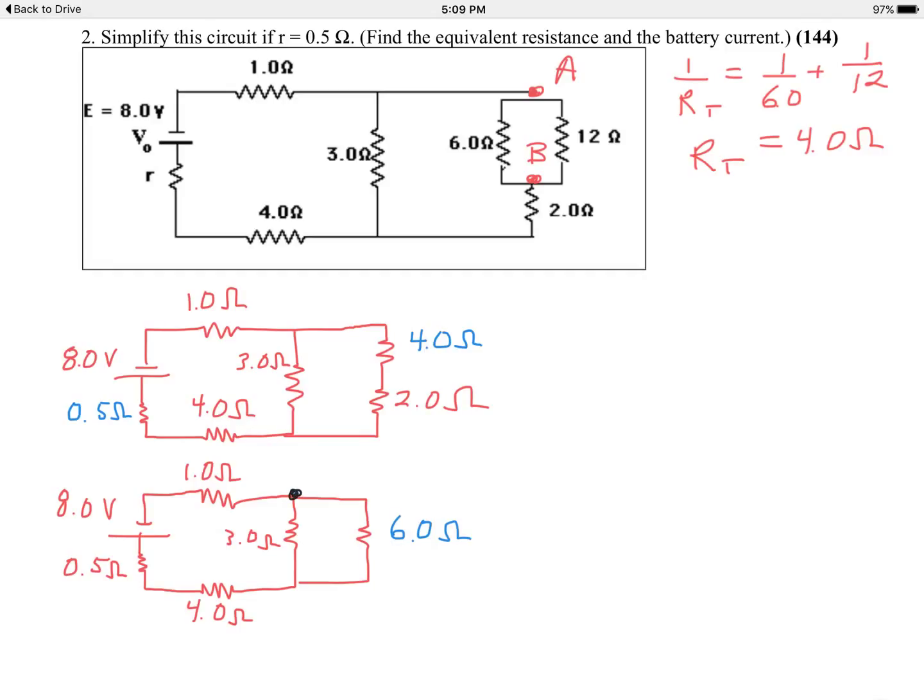If I look at this point over here, call it point D and point E. Between those two points, there are two pathways. The 3 and the 6 ohm resistors, they're in parallel. So I'll combine them by the parallel rule.